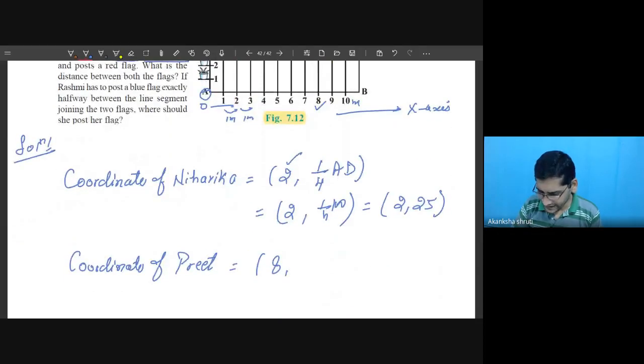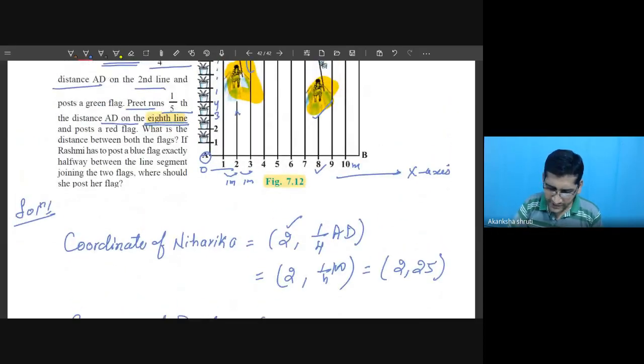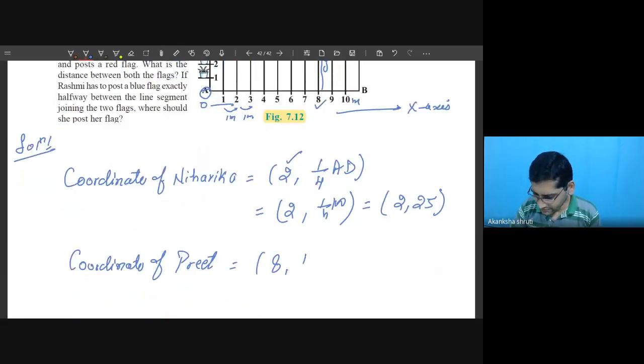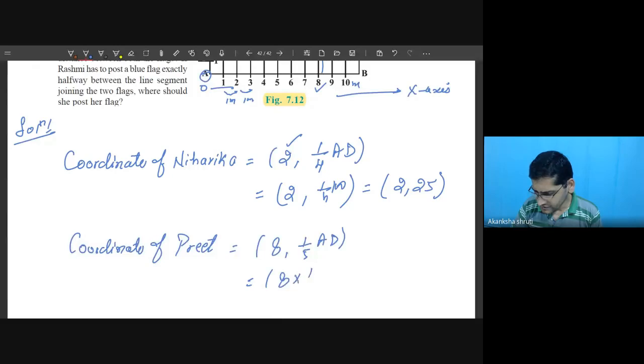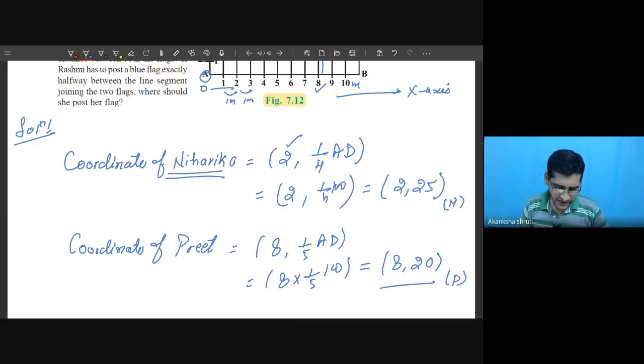Y coordinate is one-fifth of AD, so this you may call as 8, one-fifth of 100, so it is ultimately 8, 20. If you are taking this point as Niharika, let me call this as N and this point as Preet P.